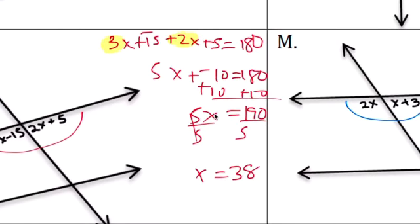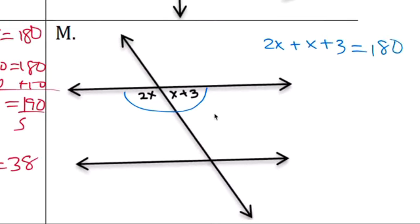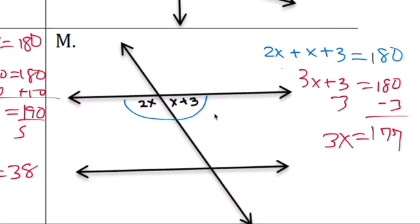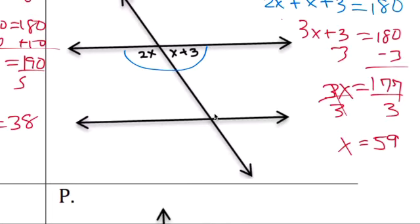Then you do the same here, 3x plus 3, 80 minus 3, divide by 3. 3x equals 259. Okay.